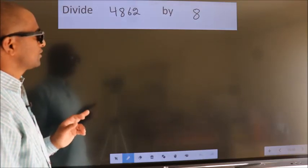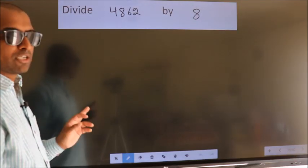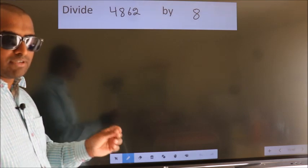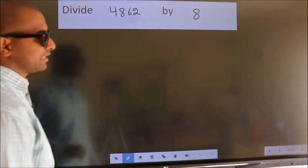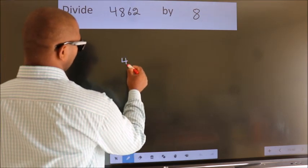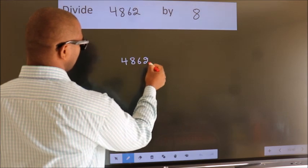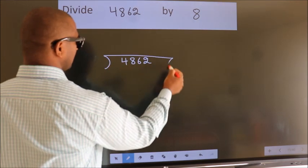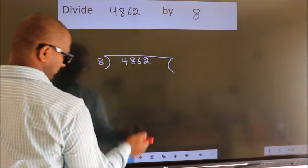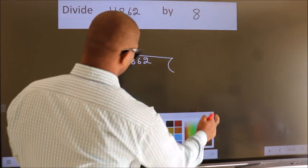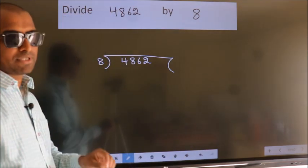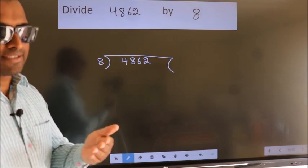Divide 4862 by 8. To do this division, we should frame it in this way: 4862 here, 8 here. This is your step 1. Next.